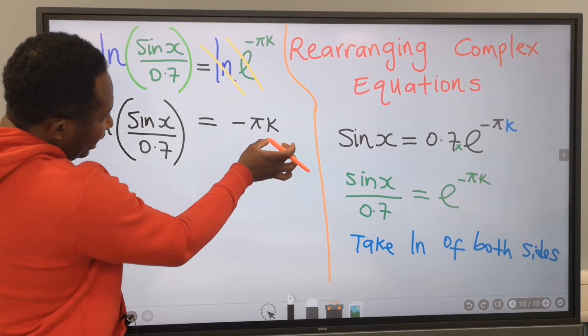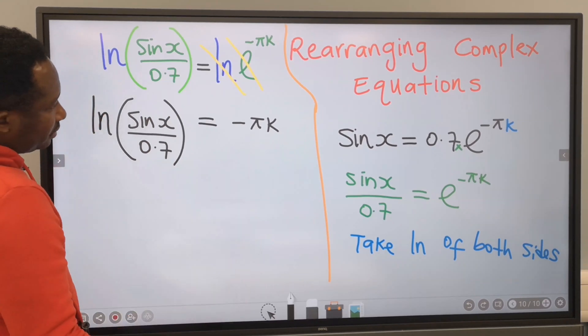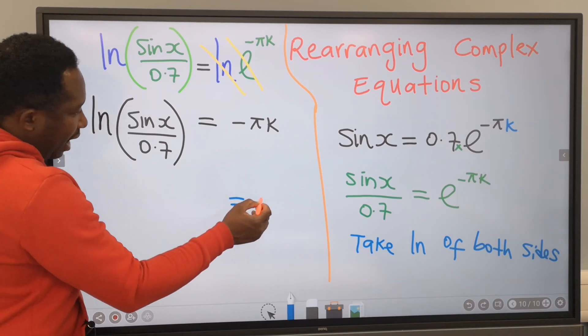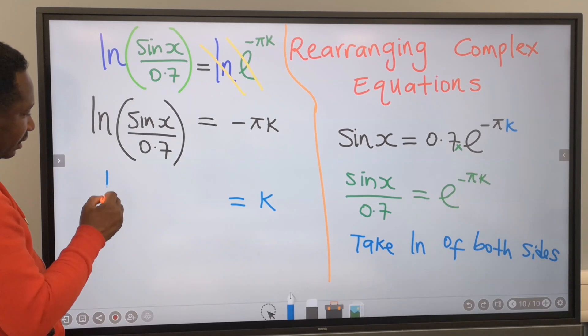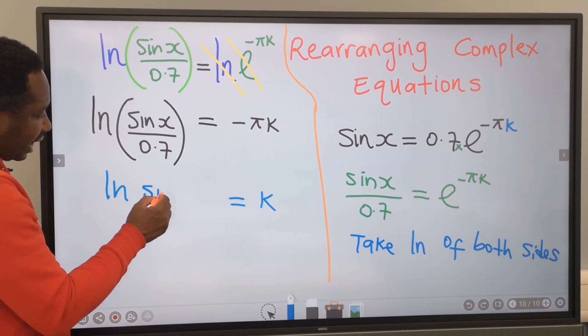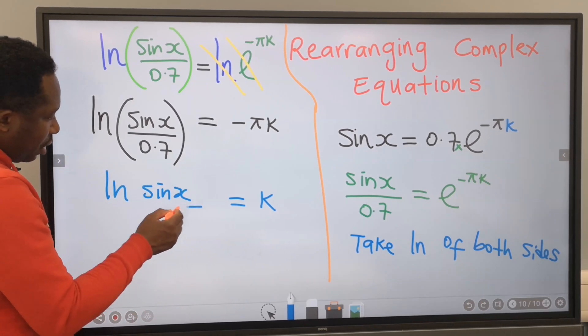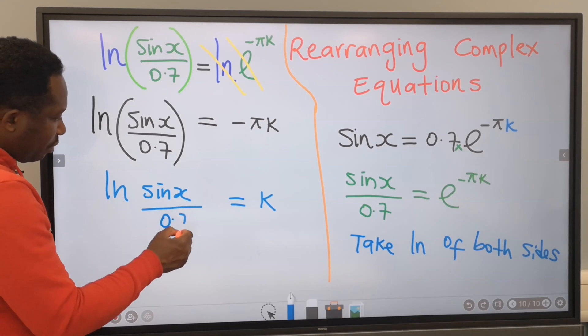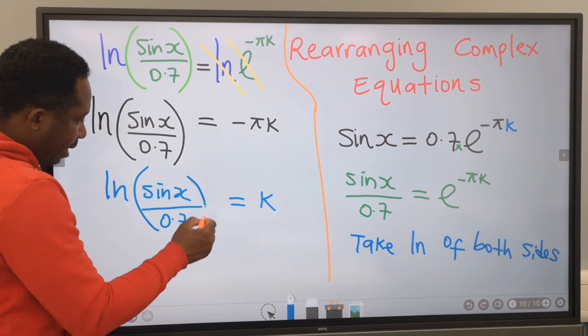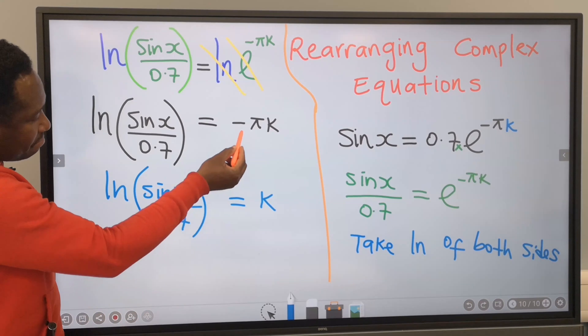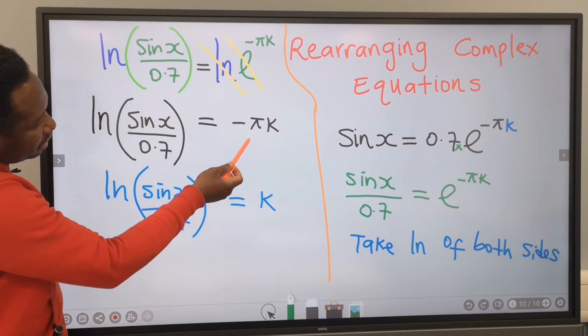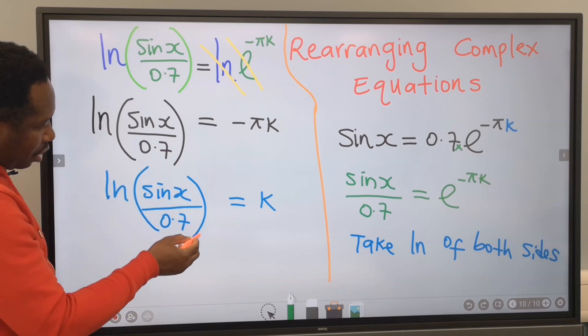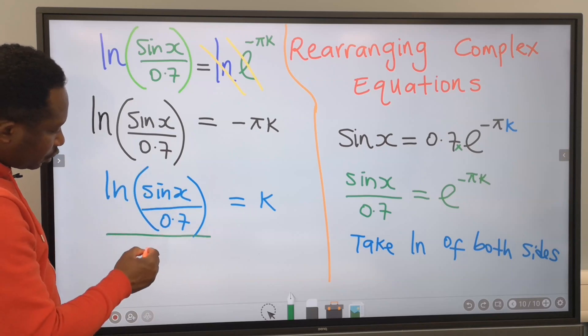I need just only k on this side. Hence, I'm going to have k. On this side, I have the natural log of sin x over 0.7 in a bracket. Minus pi will move across. And because it's multiplying, on the other side, it's going to divide.